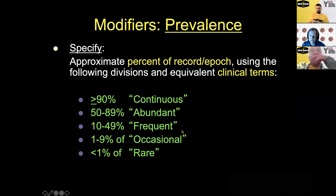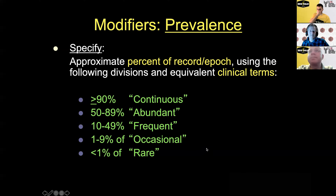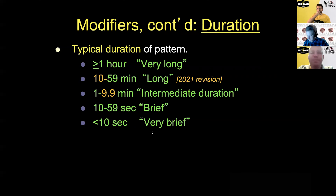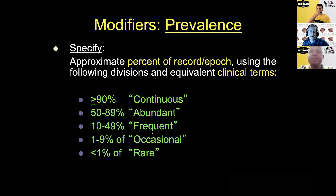Modifiers are all defined. If you say a pattern is frequent, that means it occupies between 10 and 49 percent of the record — you can't just make up uses for these things. This is prevalent, meaning the percent of the record that has a pattern. There's also duration, which is how long each instance of the pattern lasts.